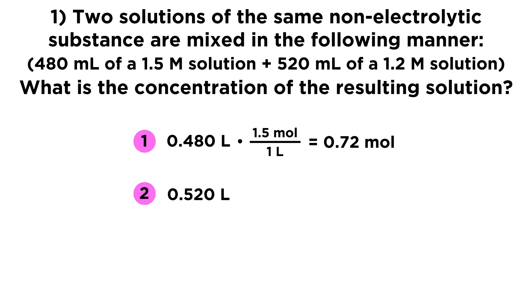Then let's do the same thing for the second solution. We have 0.52 liters of that second solution times 1.2 moles per liter because it is a 1.2 molar solution. And so that tells us we have 0.62 moles in that second solution.